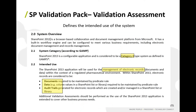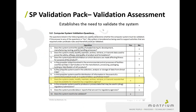We then describe the intended use: SharePoint 2013 will be used for the management of electronic records — both documents and data — within regulated pharmaceutical environments. We outline what records are considered to be: documents required by predicate rule, data required by predicate rule, or audit trails generated for electronic records. This gives us a clear scope to move forward. The next part of the validation assessment is to ascertain whether the system has regulatory impact, using a series of questions — for SharePoint, question seven applies: does the system create, modify, maintain, archive, retrieve, or transmit records that must be available for regulatory inspection? The answer is yes, so the system needs to be validated.